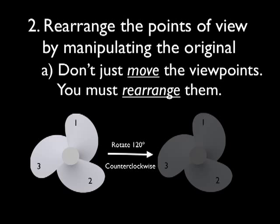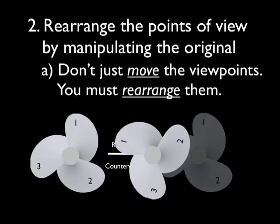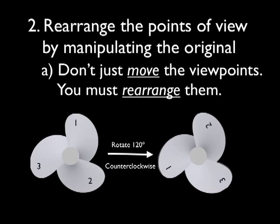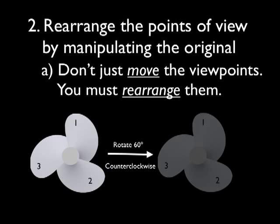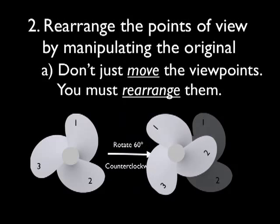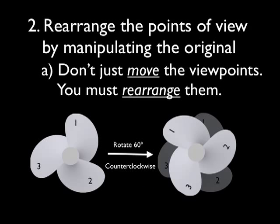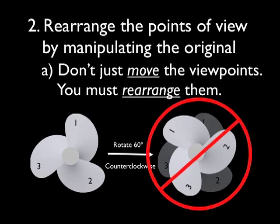So, for example, we did this 120 degree rotation counterclockwise, and that did rearrange the numbers. Where one was, two now is, and so on. However, we couldn't just do a 60 degree counterclockwise rotation. That wouldn't rearrange the numbers. It would just move them. Each viewpoint has to take a position that used to be occupied by another viewpoint. So, this is no good because the viewpoints were not rearranged. They were just moved.